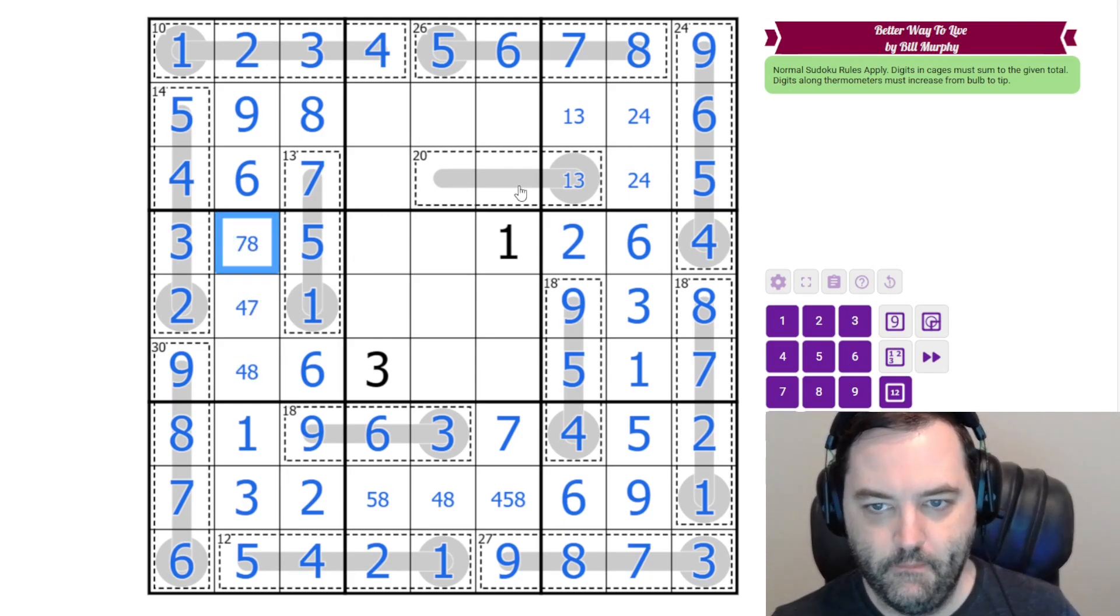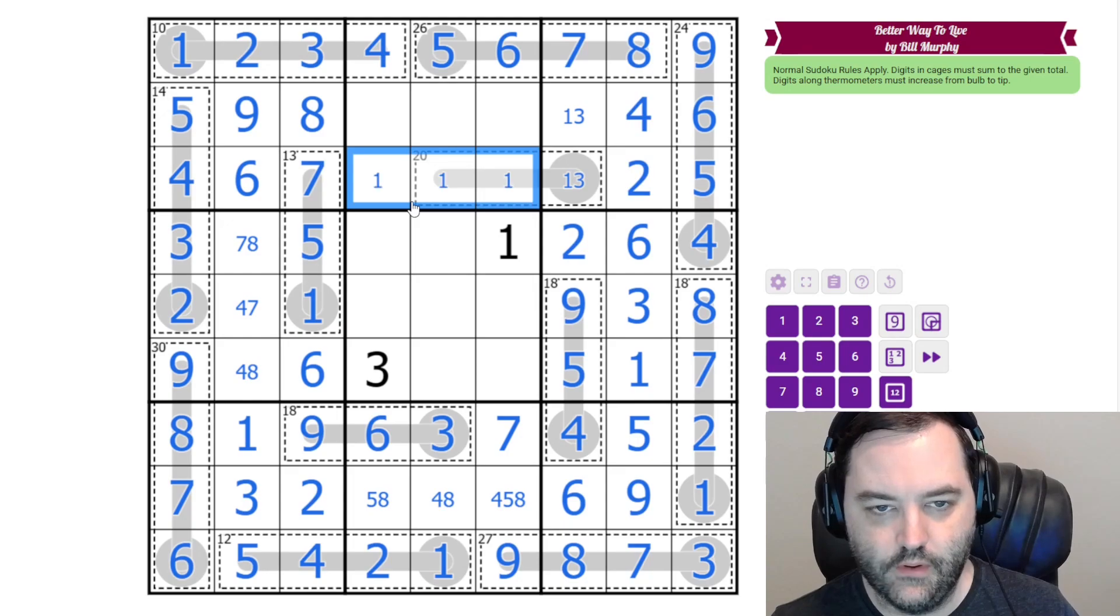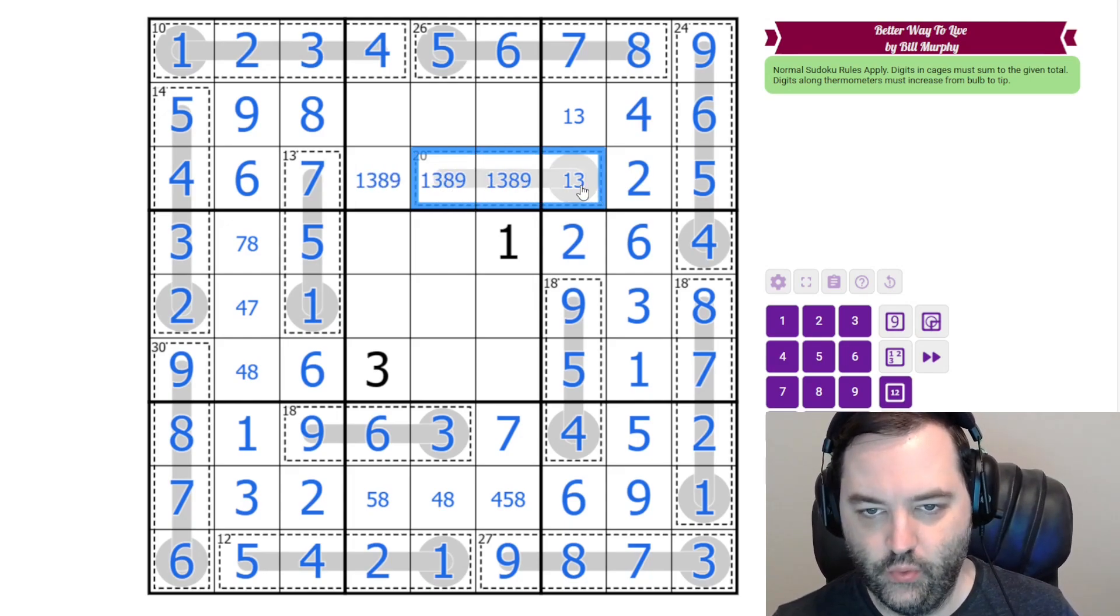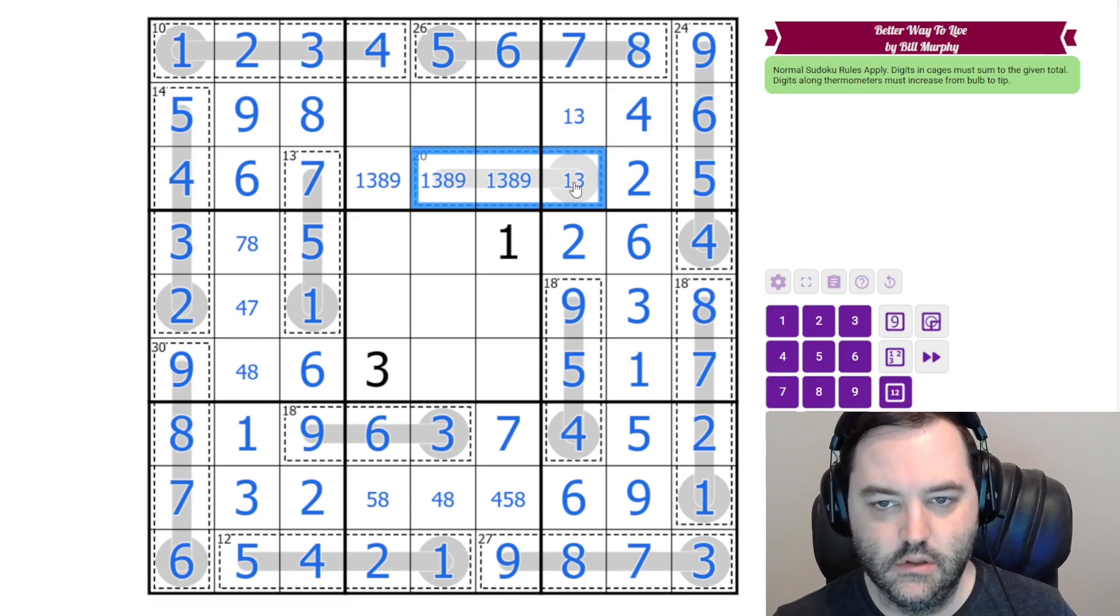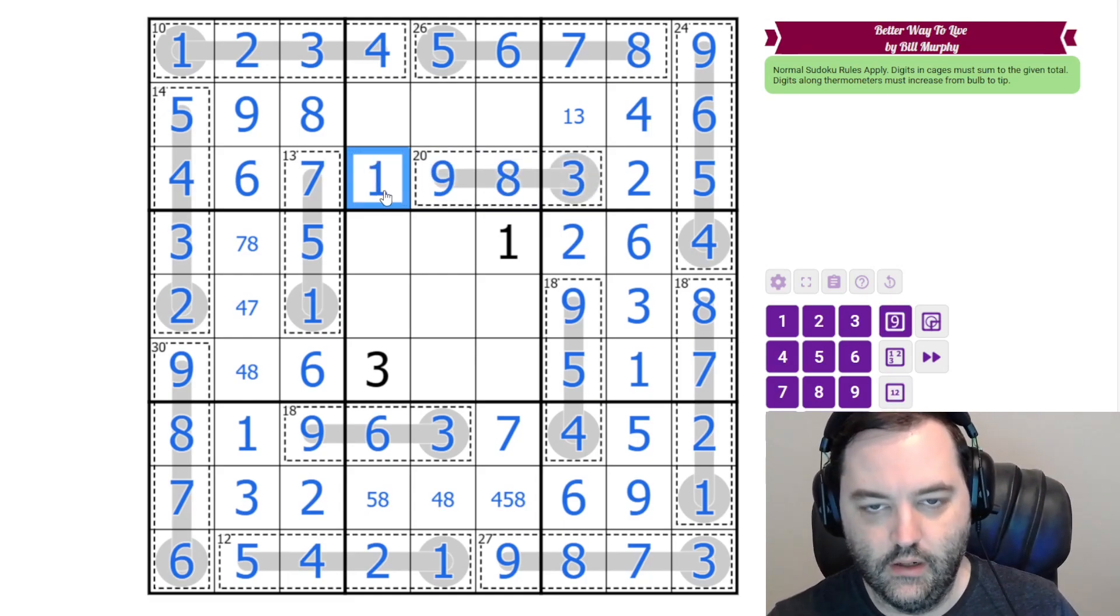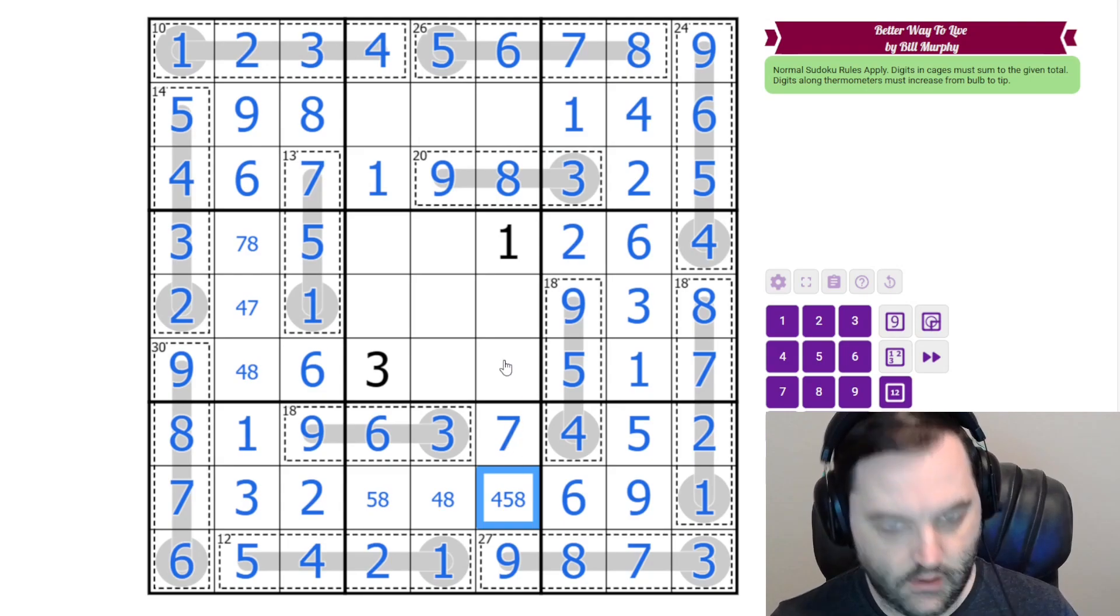All right. The four over here resolved this. That's been there for a while. These are one, three, eight, and nine. And in order to get to 20, we can't have a one in this cage. That was always the case. So that's three, eight, nine. One there, one there. And this is not eight now.